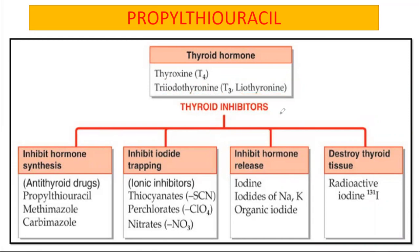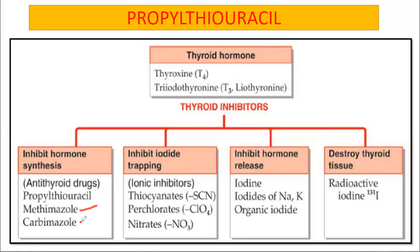The classification of thyroid inhibitors includes drugs that inhibit hormone synthesis, those that inhibit iodine trapping, those that inhibit hormone release, and those that destroy thyroid tissue. Today we are looking at propylthiouracil, which inhibits hormone synthesis. The two other drugs from this class are methimazole and carbamazole.